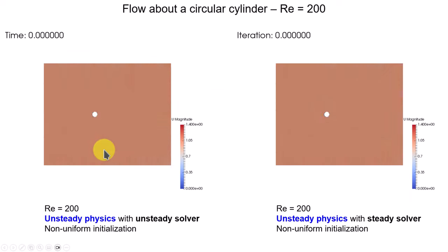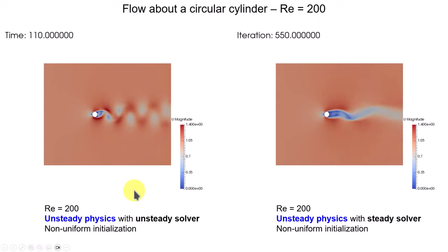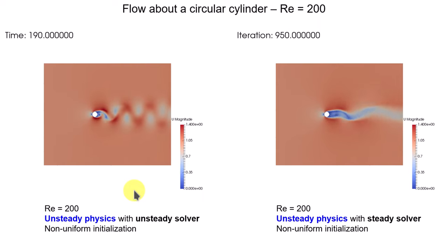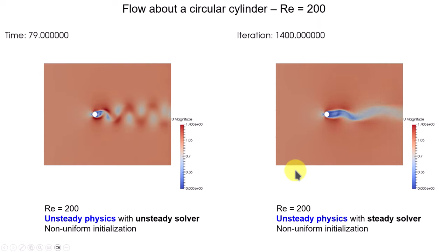So if you have unsteady physics, my advice is to use an unsteady approach. Here we have unsteady physics and we're using an unsteady solver, so we are capturing the right physics. For each iteration, your solution is not going to converge, but your linear solvers are converging. When you look at the case of unsteady physics with a steady solver, you are getting a solution, but the solution is not right — it doesn't manage to capture the physics.